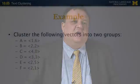Now we do the second part of the first iteration: recomputing the centroids. For the cluster that used to be at (0,0), it now includes (2,2), (4,0), and (2,1). The new centroid is the average of those vectors: (2+4+2)/3 = 8/3 for the first dimension, and (2+0+1)/3 = 1 for the second dimension, giving us approximately (2⅔, 1). For the second cluster, formerly at (6,6), we average (1,6) and (2,5): the first dimension is 1.5 and the second is 5.5. Those are the two new centroids after the first full iteration.